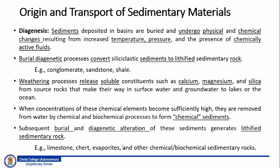Conglomerate generally has larger grain-sized particles in the rock, whereas sandstone has sand-sized particles. That is about the rocks formed from siliciclastic sediments. The second type of rock includes the soluble constituents such as calcium, magnesium and silica that go into solution because of chemical decomposition, and during the burial and diagenetic alteration these soluble constituents get lithified and form as a non-clastic sedimentary rock — examples of which include limestone, chert, evaporites and other chemical or biochemical sediments.